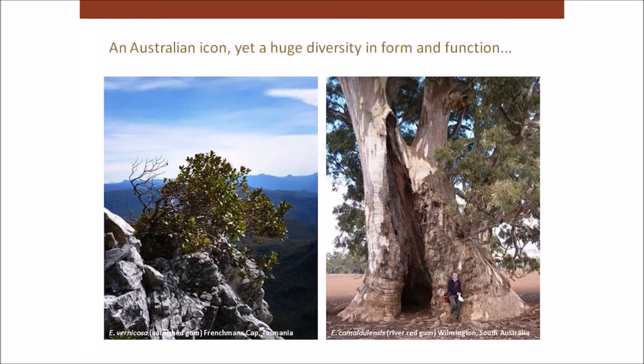If we just look at the form of the plants, the eucalypts vary from the tallest hardwood trees or flowering plants in the world, up to 100 metres tall — great big trees like this river red gum up in the Flinders Ranges of South Australia — to quite small shrub or even prostrate ground cover type woody plants, like this eucalyptus vernicosa that grows above the snow line in Tasmania. So there's a lot of diversity.